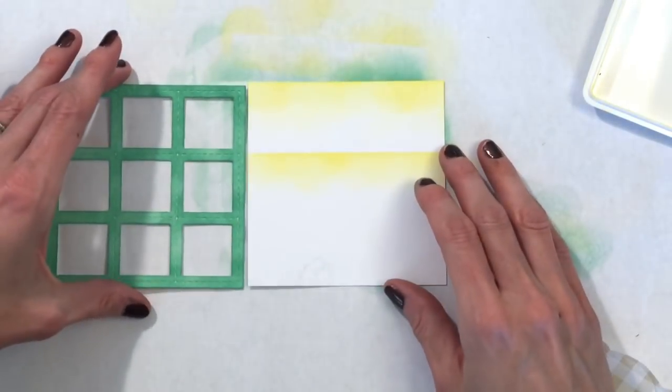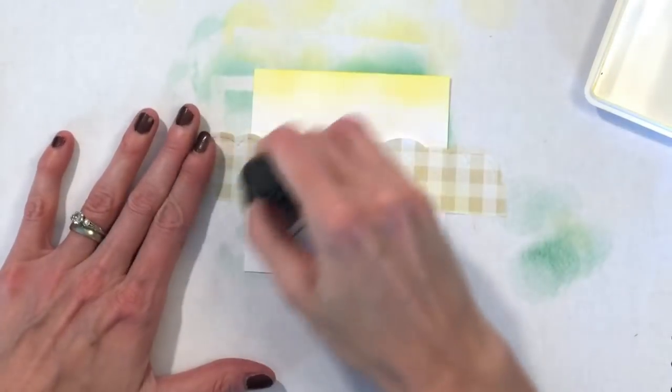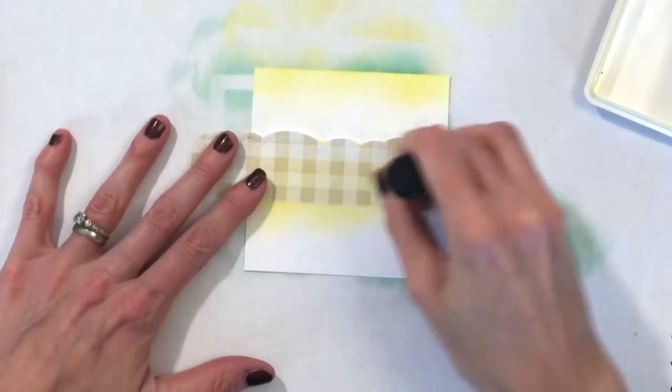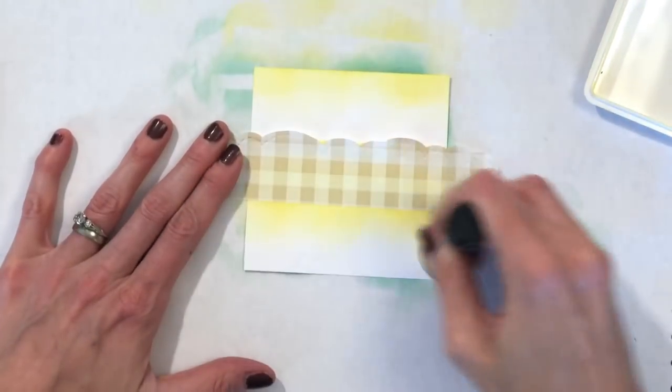And now I have one more row of windows here to do. So I'm going to grab my grid again, line up the mask so it's right in the center of the panels for the windows, and then blend some more You Said What, which is this yellow color.